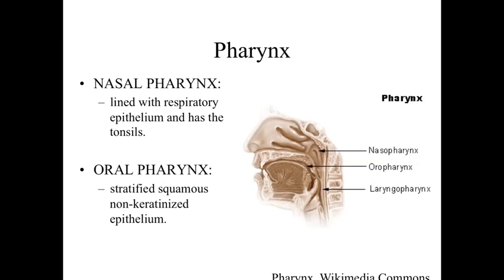The stratified squamous epithelium is resistant to abrasion, which is important because the oropharynx is a region shared between the digestive system and the respiratory system. The pseudo-stratified columnar epithelia and other respiratory epithelia would be vulnerable to damage by food particles being chewed and swallowed, so we need stratified squamous epithelia to be resistant in the area where large clumps of food material move across the epithelial lining.